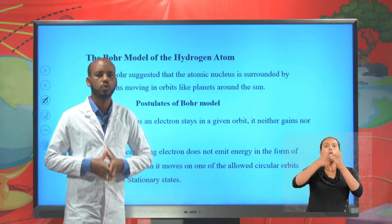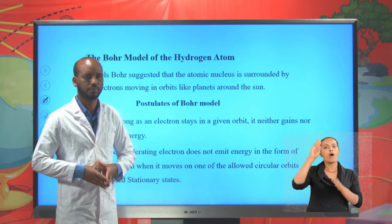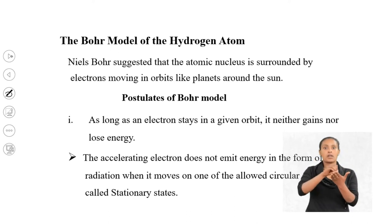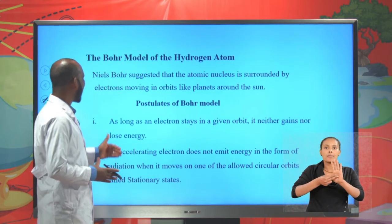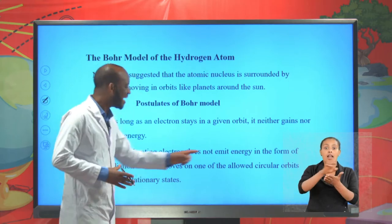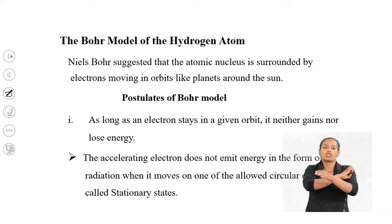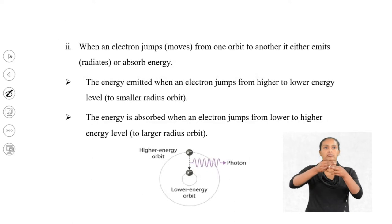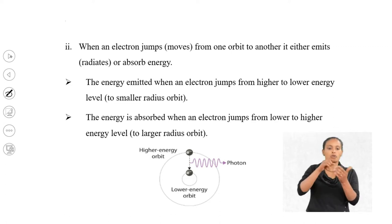What are the postulates of Bohr's model? Postulate one: as long as an electron stays in a given orbit, it neither gains nor loses energy. The accelerating electron does not emit energy in the form of radiation when it moves on one of the allowed circular orbits, called stationary states. Postulate two: when an electron jumps from one orbit to another, it either emits or absorbs energy.